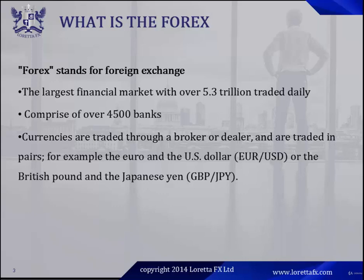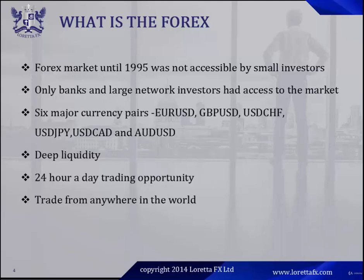Currencies are traded through a broker and traded in pairs — for example, the EUR/USD pair, the GBP/JPY pair, and the AUD/USD pair. The forex market was not accessible by small investors until 1995; only banks and large network investors had access. There are six major currency pairs: EUR/USD, GBP/USD, USD/CHF, USD/JPY, USD/CAD, and AUD/USD. There are over 60 different currency pairs, but these are the most traded.